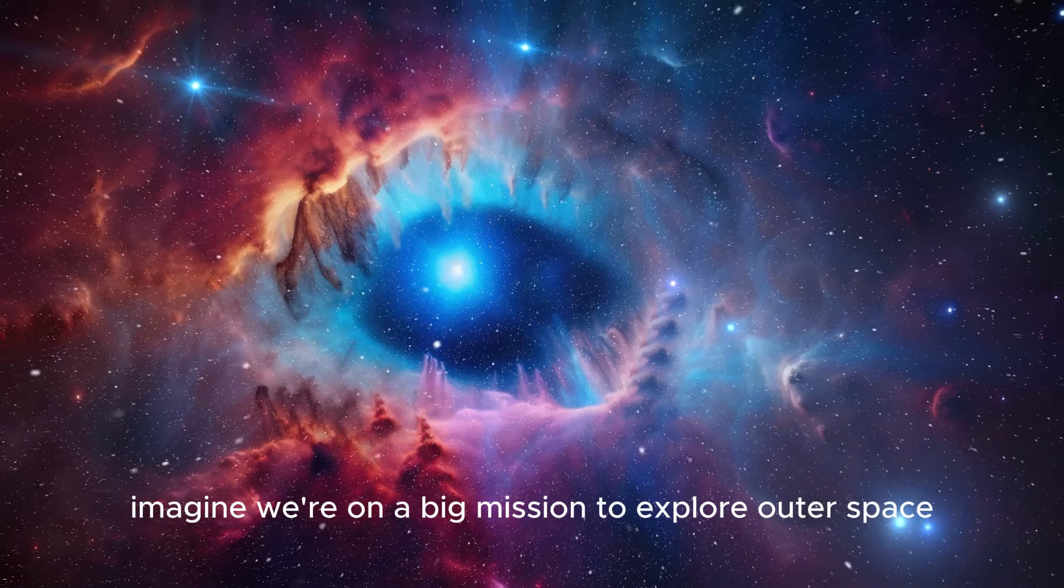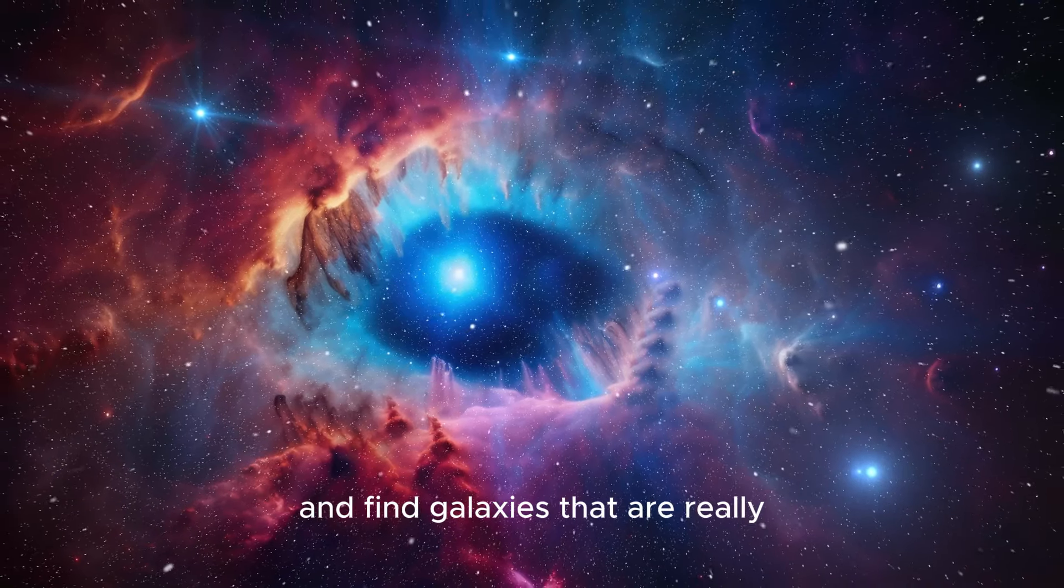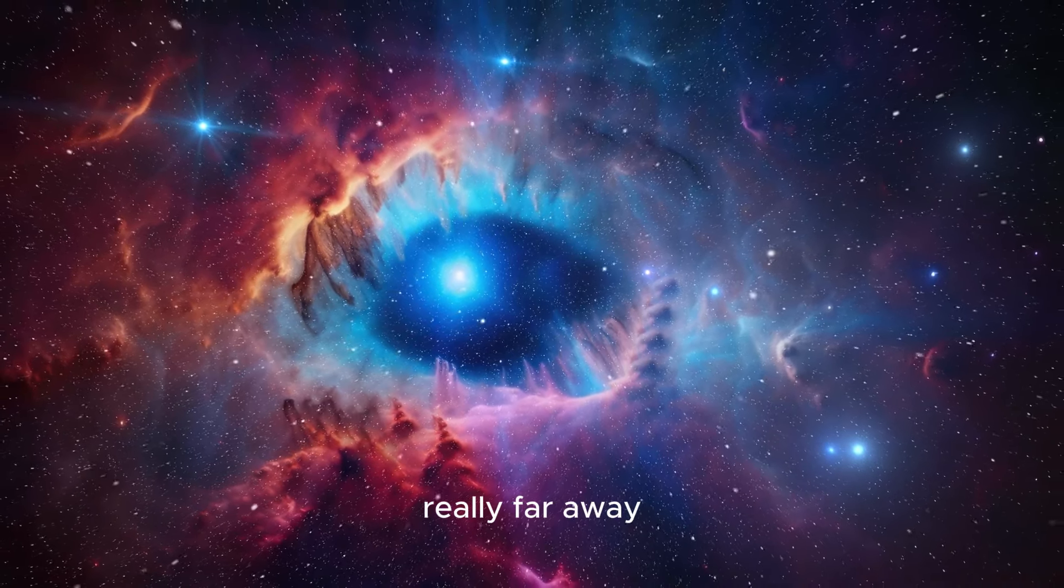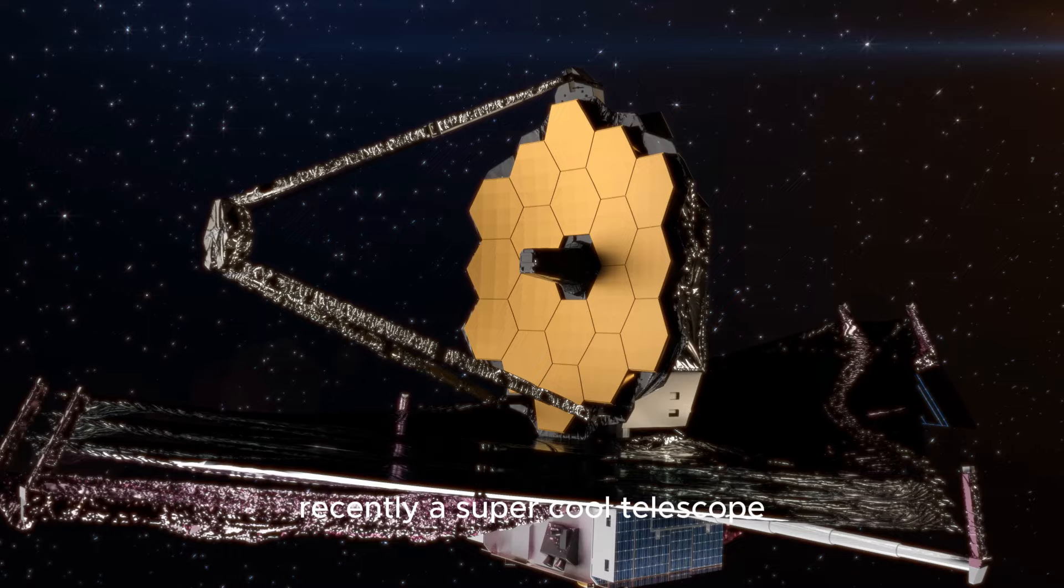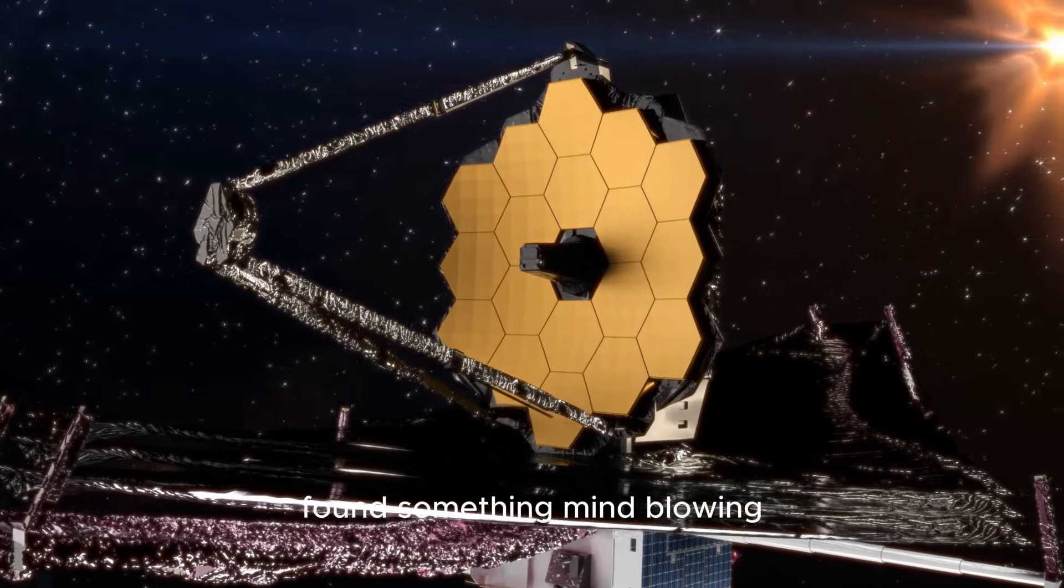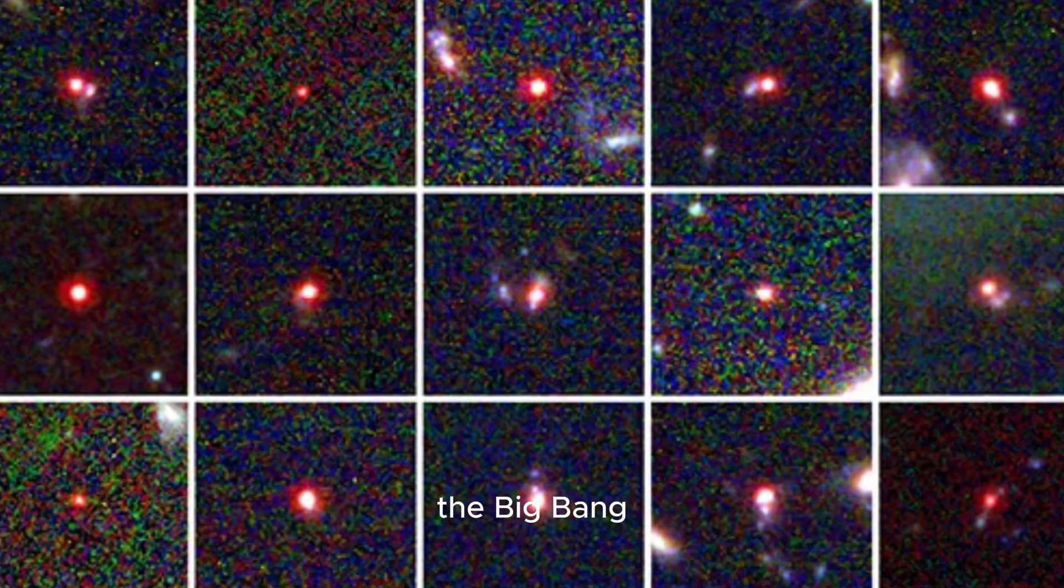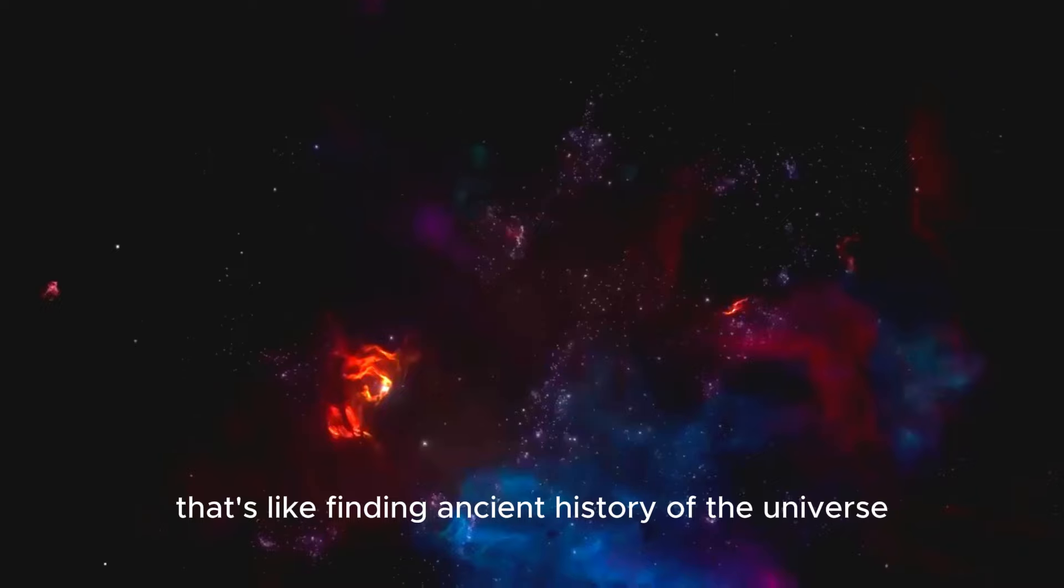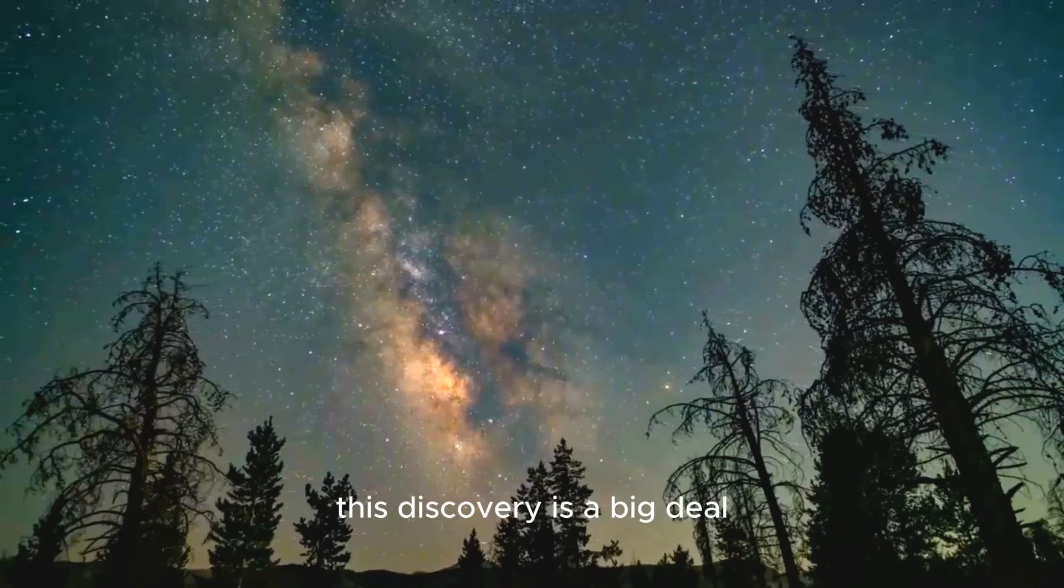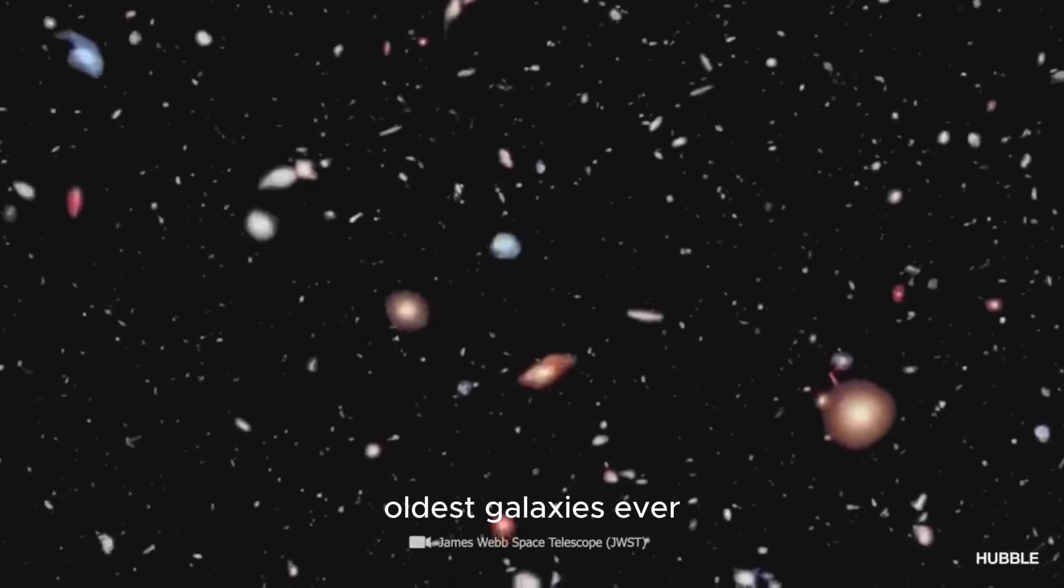Imagine we're on a big mission to explore outer space. Our goal is to go as far as we can and find galaxies that are really far away. Recently, a super cool telescope called the James Webb Space Telescope found something mind-blowing. It spotted 15 galaxies that existed even before the Big Bang. That's like finding ancient history of the universe. This discovery is a big deal because it's like starting a treasure hunt to find the oldest galaxies ever.